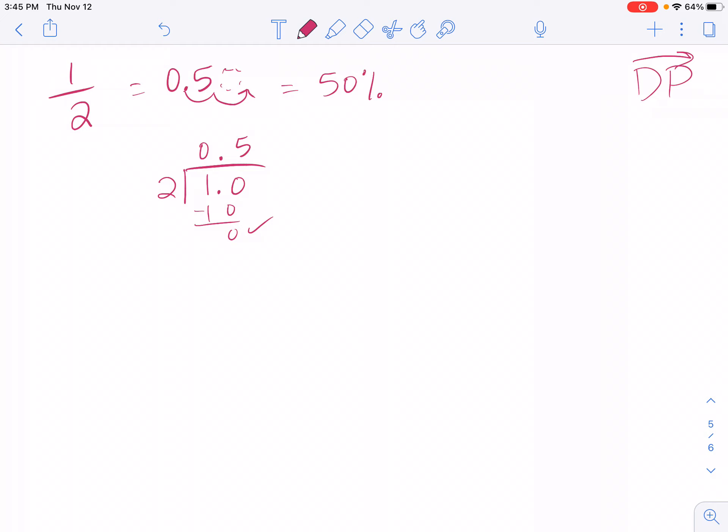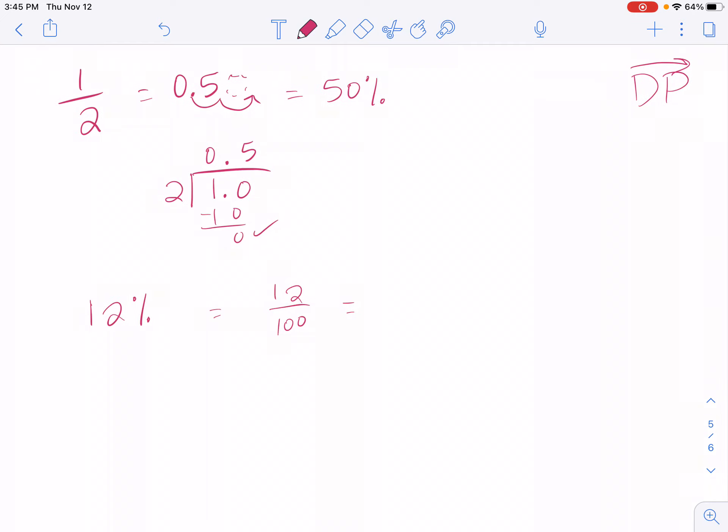Okay, and I also know if I was going the other way, like if I had 12 percent and I wanted to turn that into a fraction, I know that percents are always out of 100, so that's 12 out of 100. So my last step is just to simplify my fraction.